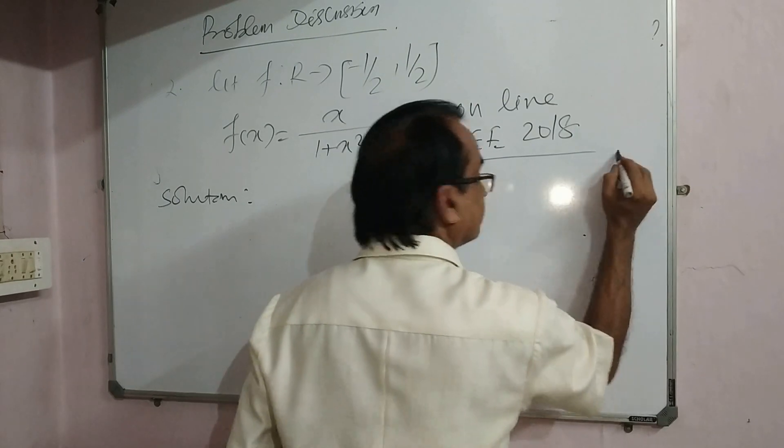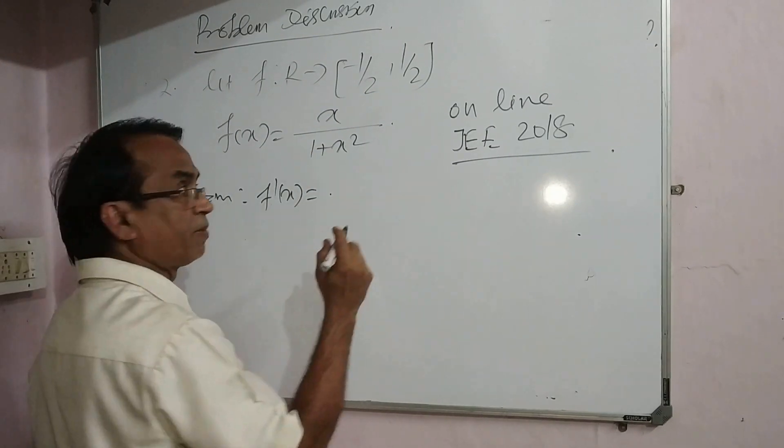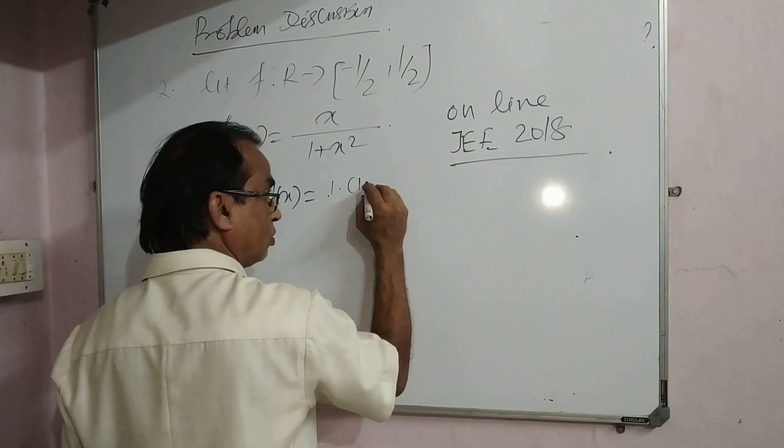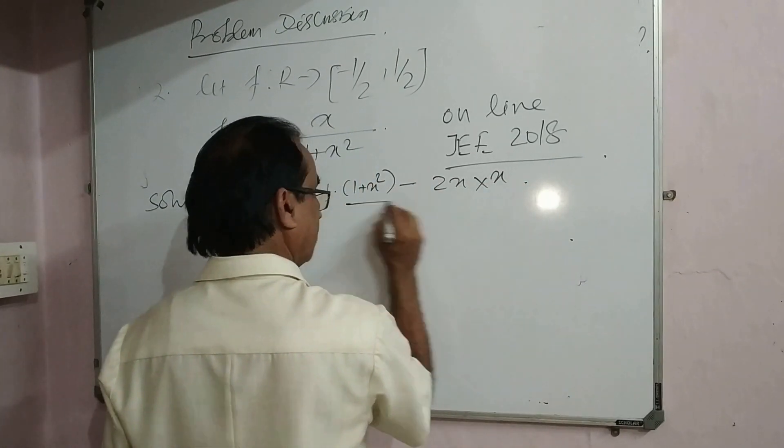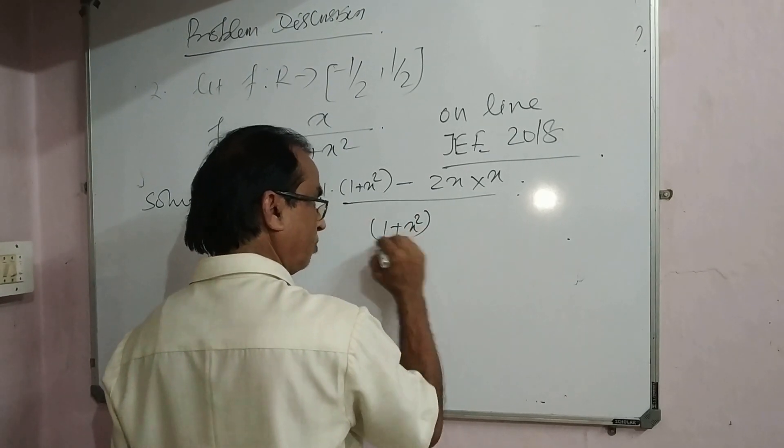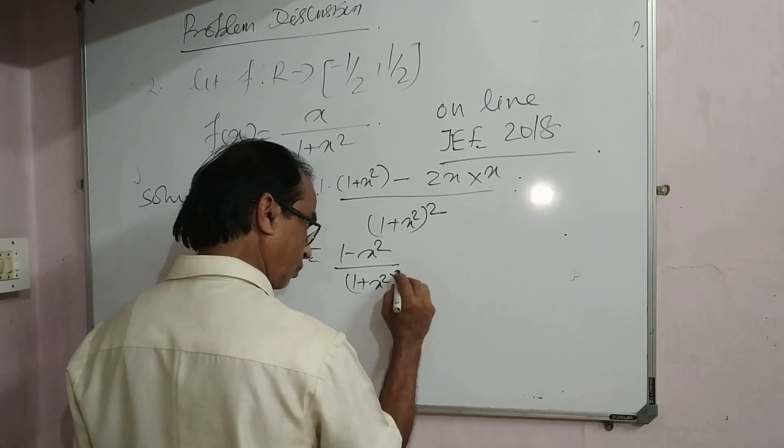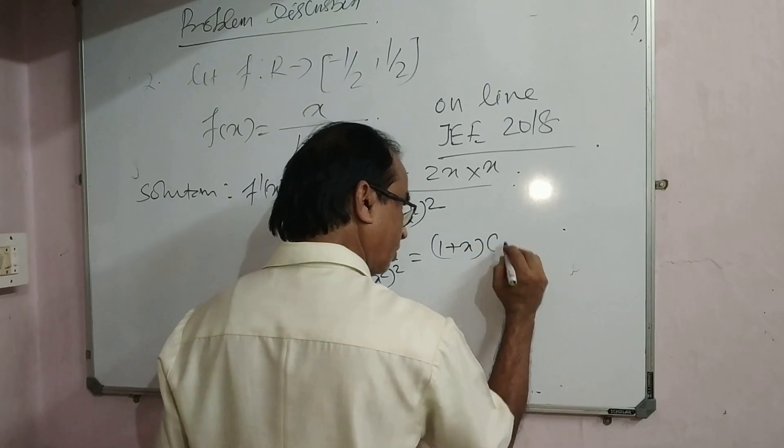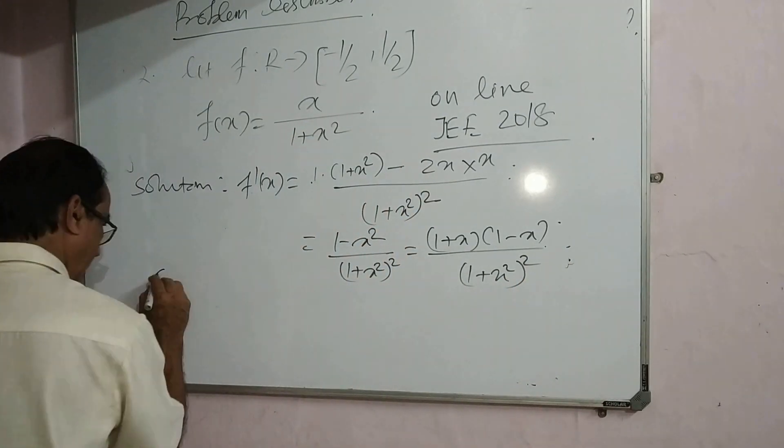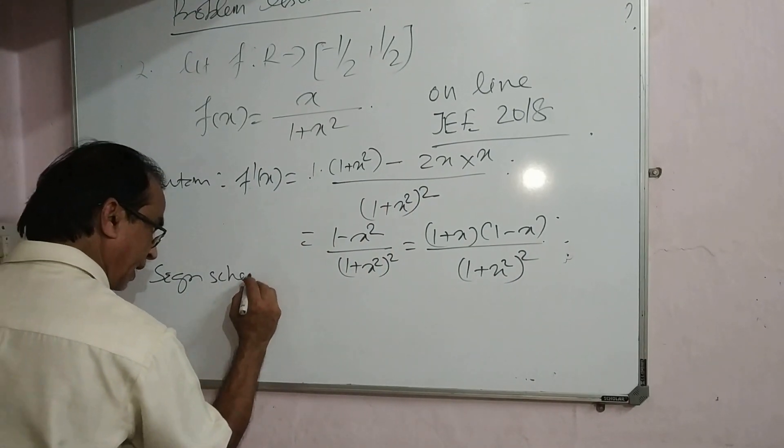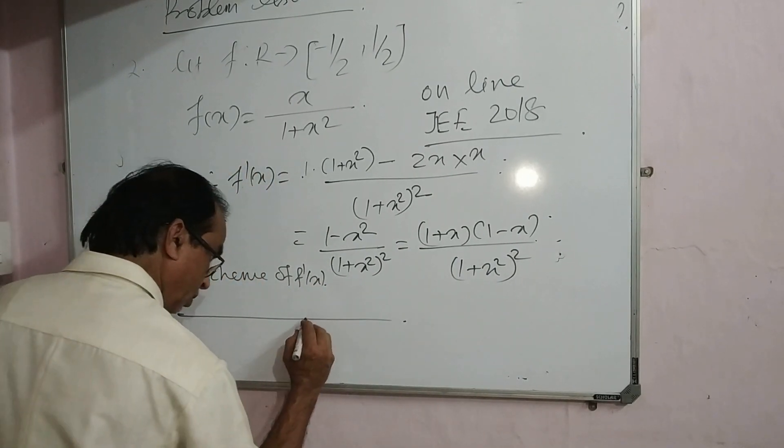Let's see f'(x) using the quotient rule: derivative of numerator times denominator minus derivative of denominator times numerator, divided by denominator squared. This gives 1 minus x squared divided by 1 plus x squared squared, which equals 1 plus x times 1 minus x divided by 1 plus x squared squared.